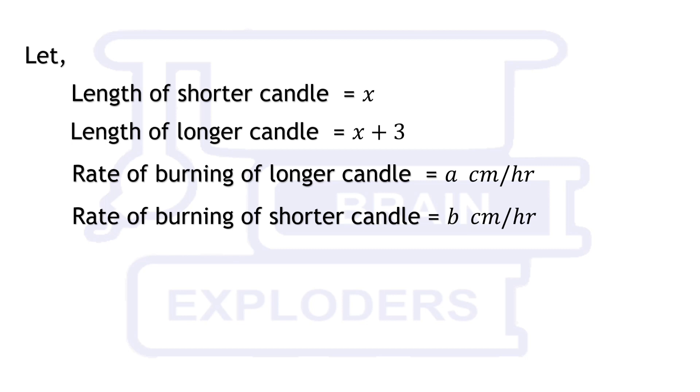These rates tell us that length of longer candle will decrease by a cm in 1 hour and length of shorter candle will decrease by b cm in 1 hour.